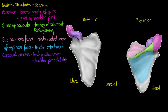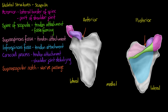The acromion and the coracoid process extend out over the shoulder joint capsule. The next structure, pointed out with an arrow, is called the supra-scapular notch. We can see the supra-scapular notch on the anterior side and from the posterior as well. It is the point where the supra-scapular nerve passes through. On some people this notch may be a vastly different shape or may even be absent.